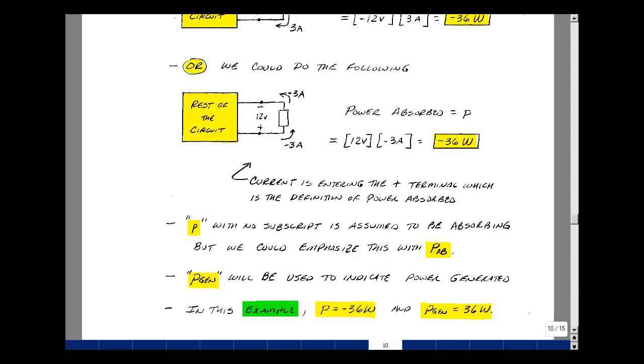So I'm going to take a variation on this for the course, and that's put the subscript GEN for generated. So the default notation is the letter P will stand for power absorbed, but if I ever talk about power generated, I need to put a subscript to indicate that that's different than our default definition.